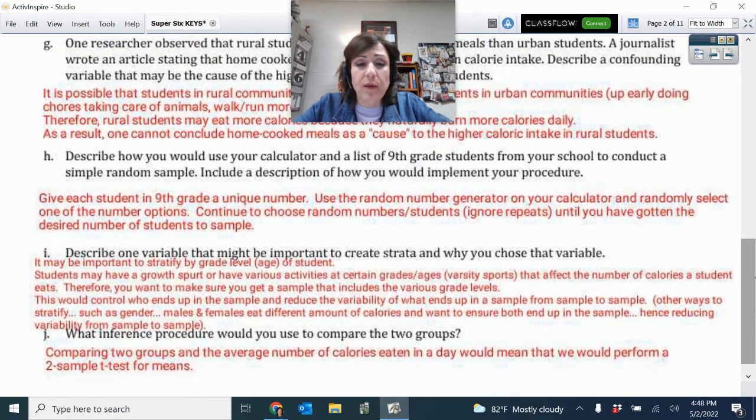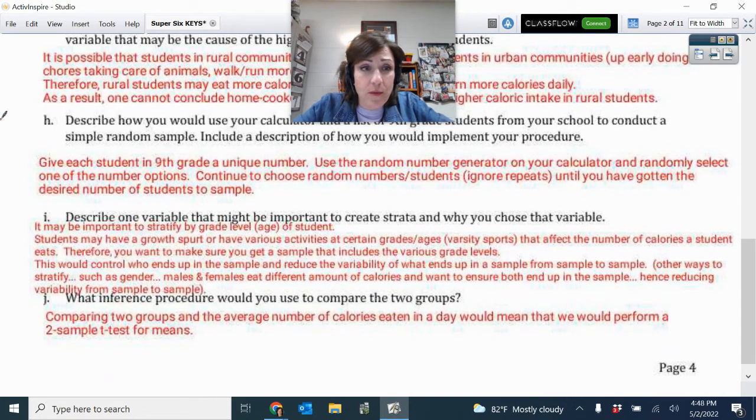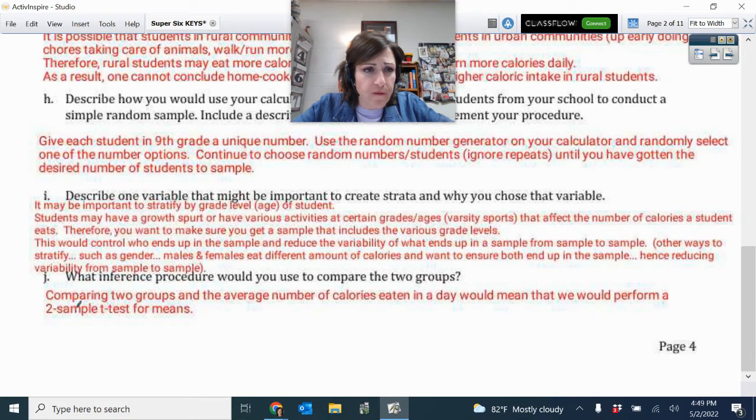Describe how you would use your calculator. Okay, so we've not really done that with a random number generator. But you would give each ninth grade student their own particular number. Or, you know, we've always done a simple random sample for just put all their names in a big bag, shake well, and then pull them out. So the key is, though, here, you need to make sure when you pull them out of the bag or you generate a number that you ignore any repeats. When you pull them out of the bag, you keep them out of the bag. When you use that number, you do not use that number again. So that was a key thing that we were looking for there.